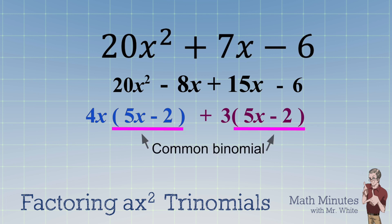And there it is, a common binomial again. We factor it out, and then we write what's left behind in the second set of parentheses. So in the first grouping, 4x is left behind, and in the second group, 3 is left behind. So 4x plus 3 is the second binomial in the factorization.